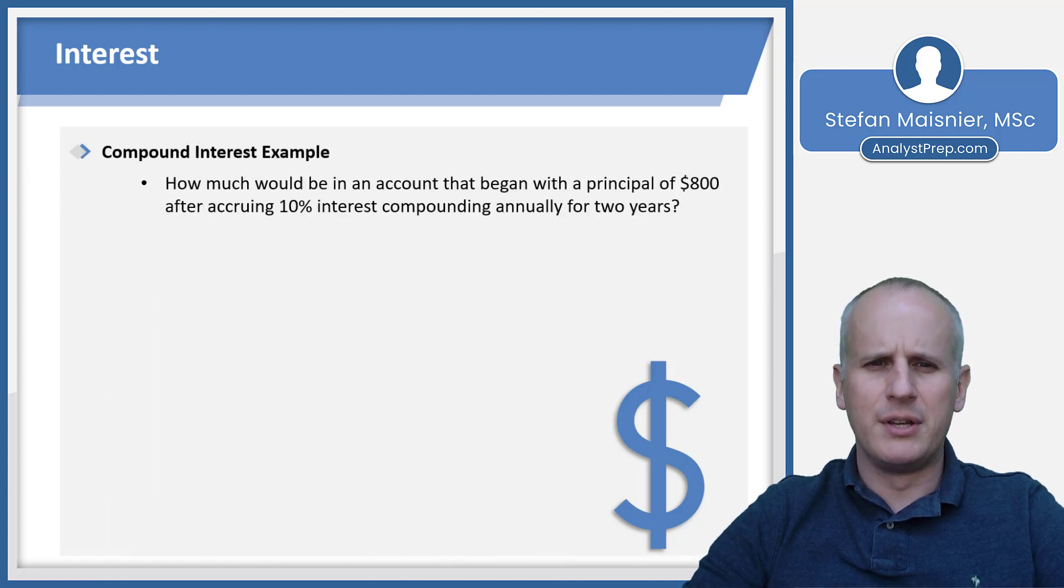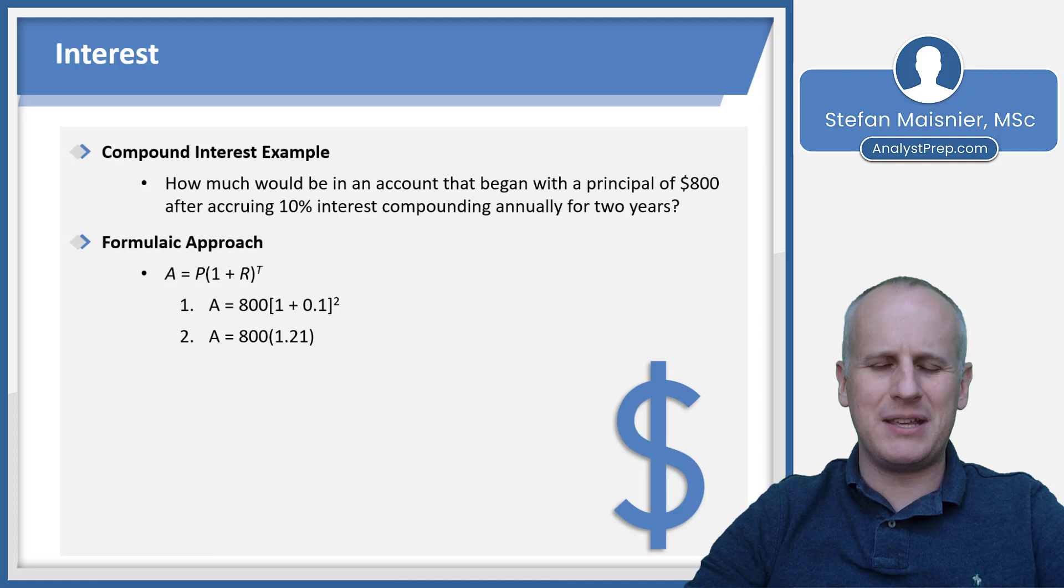Let's take a look at a compound interest example. How much would be in an account that began with the principle of $800 after accruing 10% interest compounding annually for two years? Formulaically, it's A equals P times the quantity 1 plus R raised to the T power. We fill in the pieces. We know that A is going to be equal to 800 times the quantity 1 plus 0.1, the 10% as a decimal, but this time squared. So we end up with A equals 800 times 1.21 because 1.1 squared equals 1.21. Then you'd multiply that through and you'd get 968.